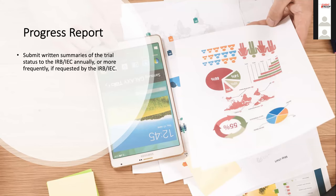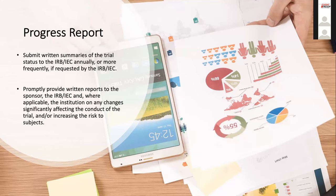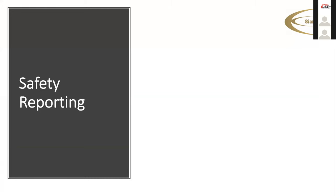What goes inside this written summary - ICH doesn't give guidance. Usually the IRB will tell you what they want to see, for example number of subjects screened, number enrolled, the side effect profile, any issues. You must also promptly provide written reports to the sponsor and ethics committees on any changes that significantly affect the conduct of the trial or increase risk to subjects. For example, if your study team has all decided to leave and go to other roles, that's a significant change - you must let the sponsor and IRB know that there's a new team coming on board. So there's a lot of communication going on with the IRB.